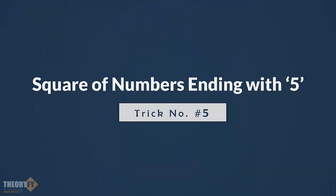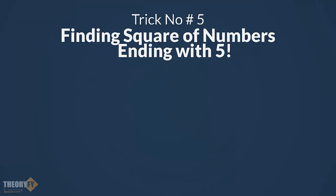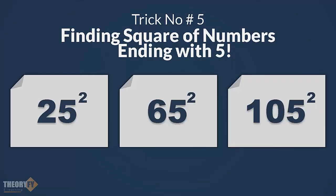Hello Learners! We are here with our last trick where we will learn how to multiply any number which ends with 5 with itself. To put it simply, we are going to find the square of numbers ending with 5. So trick number 5 is finding the square of numbers ending with 5.